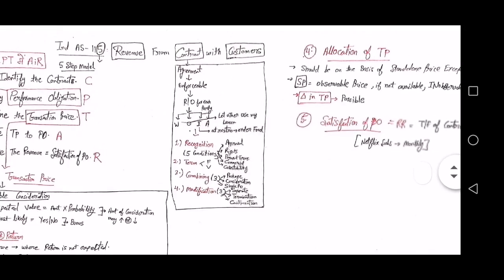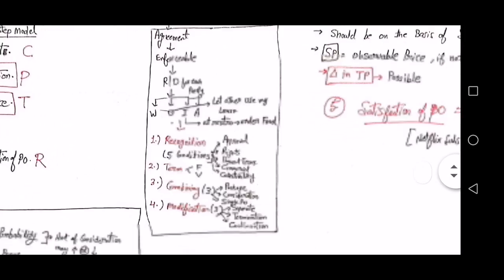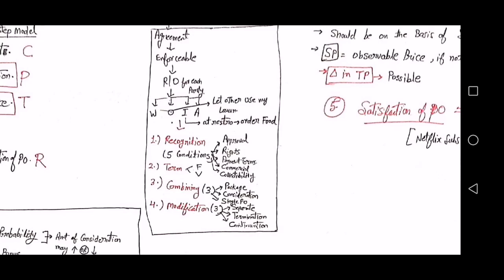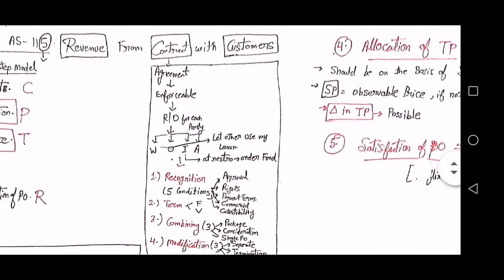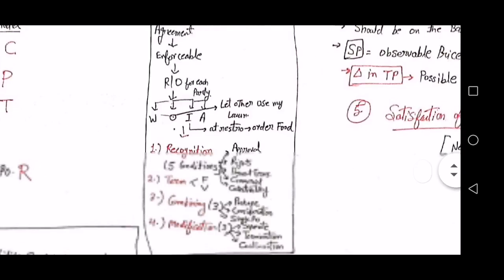Step number one is the contract. A contract is an agreement which is enforceable by law and it creates rights and obligations for each party. If A and B enter into an agreement, it creates rights and obligations for A as well as rights and obligations for B. A contract can be written, oral, implied, or any other customary practice.